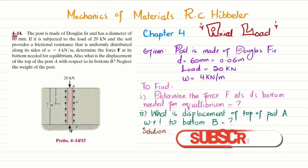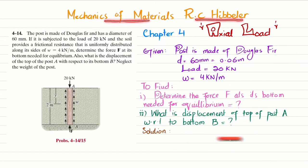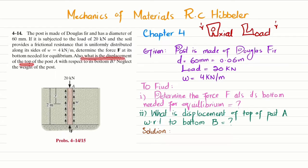Welcome back. Problem 4-14 is taken from chapter 4, axial load, from the book Mechanics of Materials by R.C. Hibbeler. The statement is: the post is made of Douglas Fir and has a diameter of 60 millimeters. It is subjected to a load of 20 kilonewtons, and the soil provides frictional resistance uniformly distributed along its side, w = 4 kilonewton per meter. Determine the force F at its bottom needed for equilibrium.